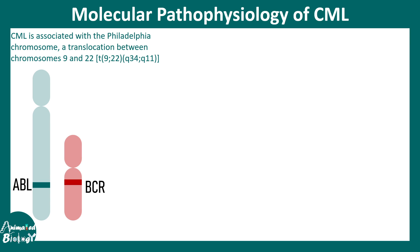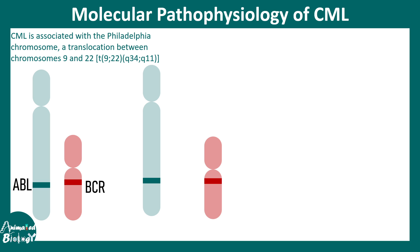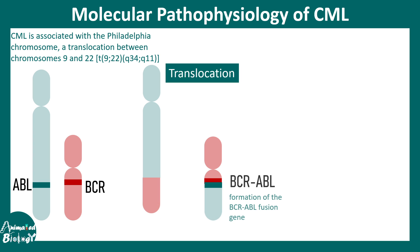In the case of the Philadelphia chromosome, the translocation happens between chromosome number 9 and chromosome number 22. Chromosome 9 carries the ABL gene, and the BCR gene is present on chromosome 22. The segments are exchanged such that the ABL gene is translocated, forming a BCR-ABL fusion gene.